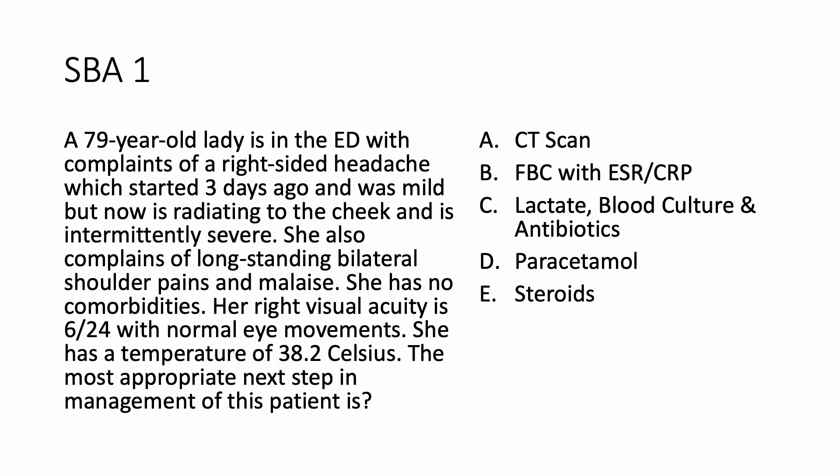A 79-year-old lady is in the emergency department with complaints of a right-sided headache which started three days ago, was mild but now is radiating to the cheek and is intermittently severe. She also complains of long-standing bilateral shoulder pains and malaise. She has no comorbidities. Her right visual acuity is 6/24 with normal eye movements. She has a temperature of 38.2 Celsius.